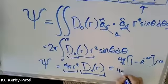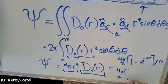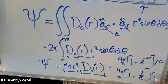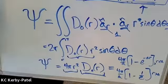or four pi over a times one minus one over e for r greater than a. Dividing through by four pi r squared,